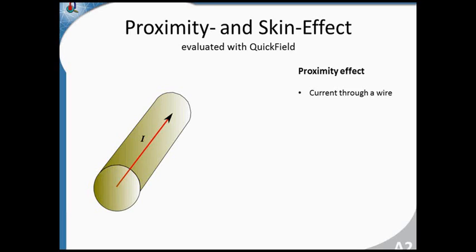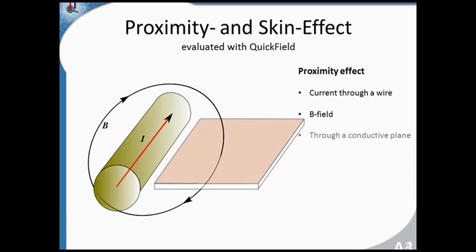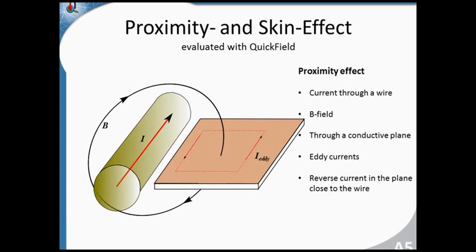Let's start with a simple wire conductor in which a current is flowing. Although the arrows suggest a direct current, we assume it is an alternating current with a variable frequency. This causes a magnetic field around the wire, which penetrates a conductive plate if there is one. This could be the case when we have a PCB with a trace on one side and a plane on the other side. And as this is an alternating magnetic field, there are induced currents in the plane, so-called eddy currents.